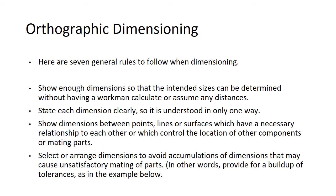Seven general rules to follow when dimensioning. Show enough dimensions so that the intended sizes can be determined without having a workman calculate or assume any distances. State each dimension clearly so it is understood in only one way. Show dimensions between points, lines, or surfaces which may have a necessary relationship to each other, or which control the location of other components or mating parts. Select or arrange dimensions to avoid accumulations of dimensions that may cause unsatisfactory mating of parts. In other words, provide for a buildup of tolerances.